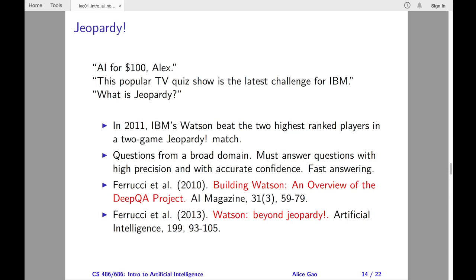To succeed at Jeopardy, players must overcome several challenges. First, questions come from a broad domain and use rich and varied natural language expressions. Second, players must answer questions with high precision and high confidence. Third, players must answer the questions very quickly. On average, champion players must correctly answer at least 85% of the questions they buzz in for, and they must buzz in for at least 70% of all the questions.